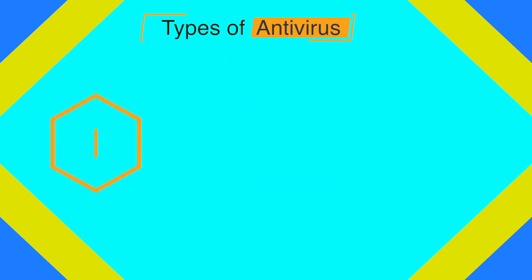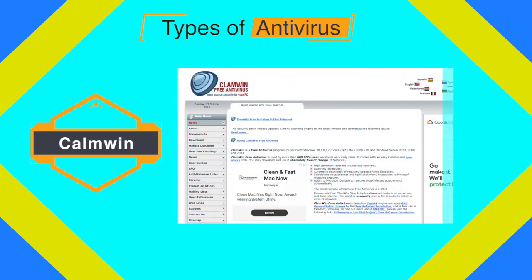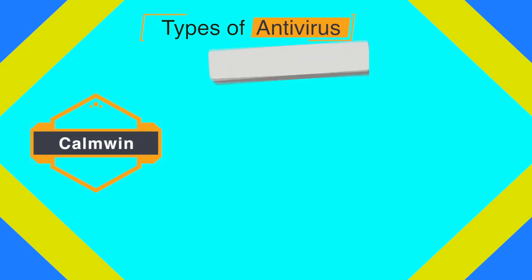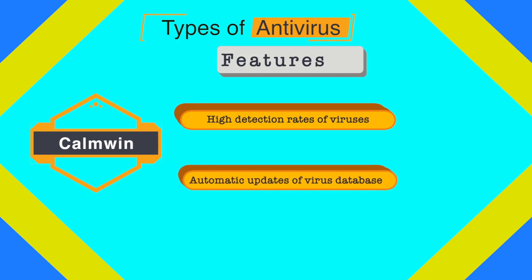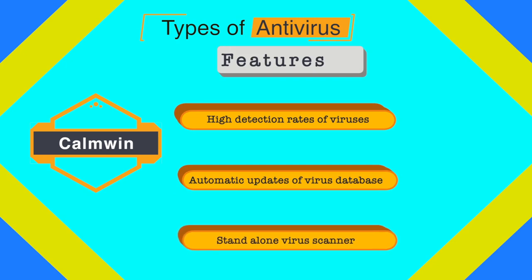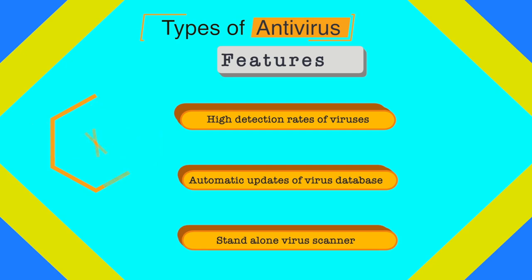The next very popular antivirus is ClamWin, an open-source free antivirus program for Windows from version 98 to Vista. It features high detection rates for viruses, automatic downloads of regularly updated virus databases, and a standalone virus scanner. Though it does not include an on-access real-time scanner, it still offers other features usually available in pro versions.